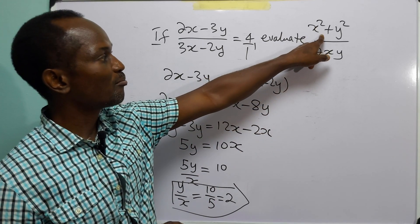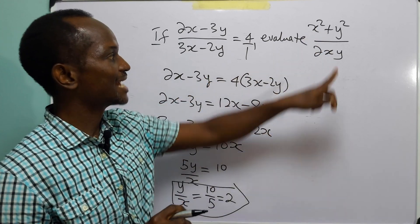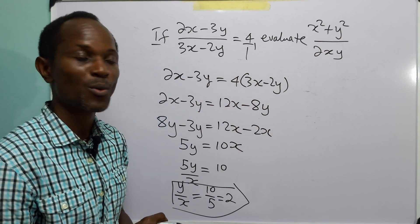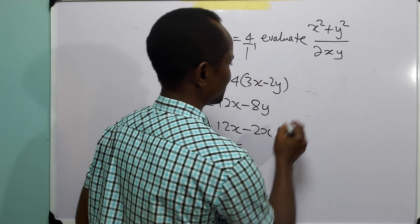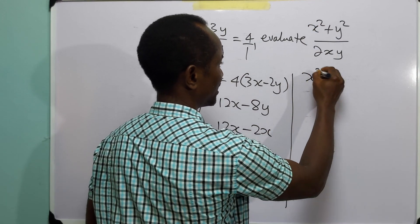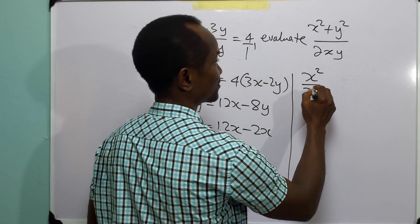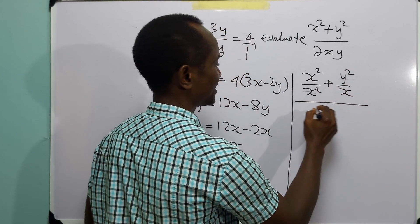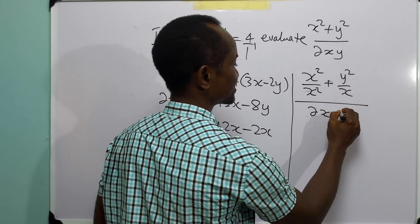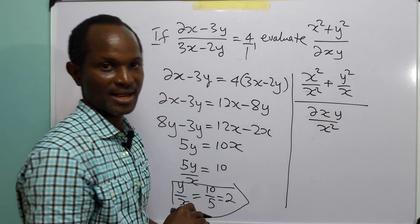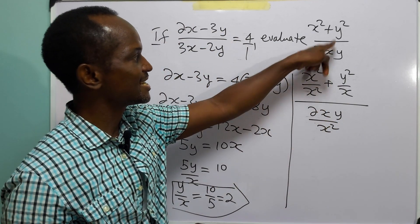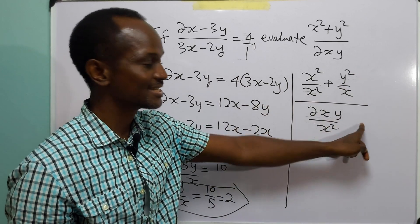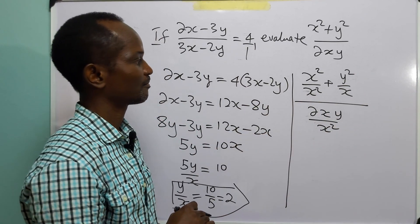Now, what we do is come over to this equation and divide both the numerator and the denominator by x squared. Here, you have x squared over x squared plus y squared over x squared, all divided by 2xy over x squared. We haven't made any change to this because what we did to the numerator, we did to the denominator.